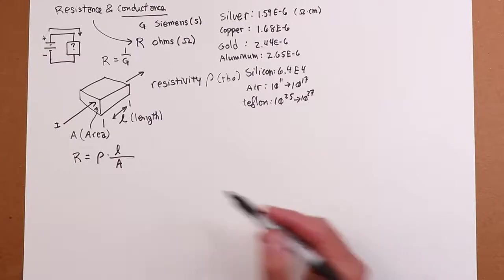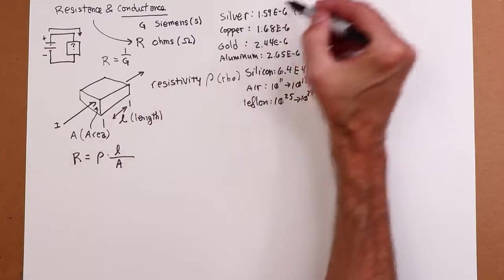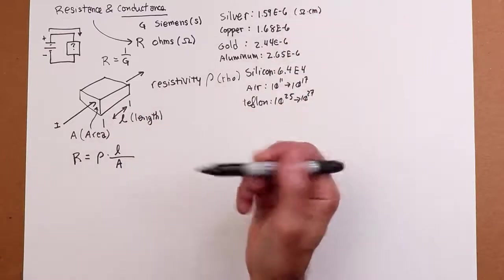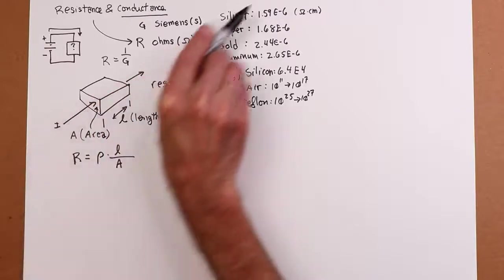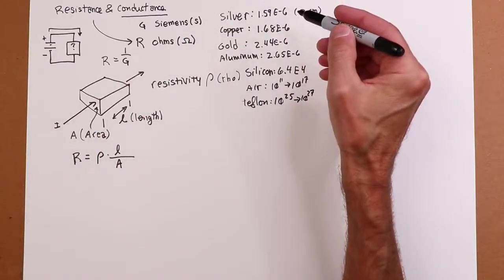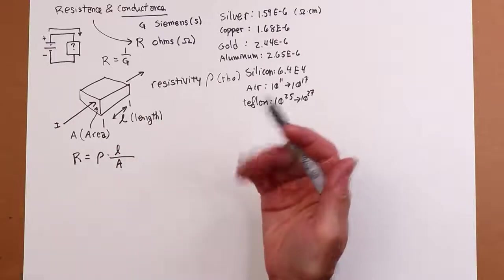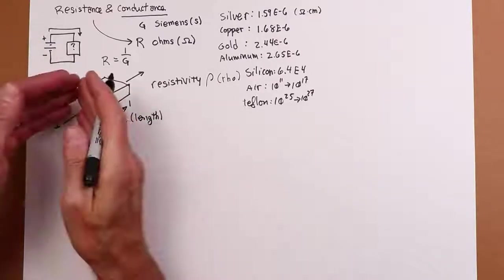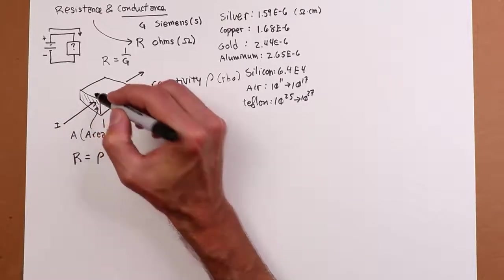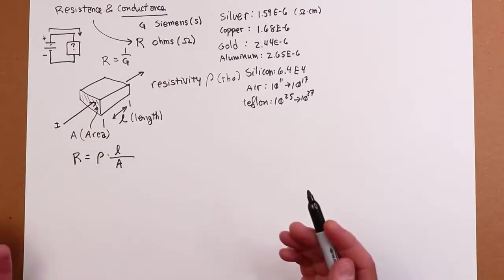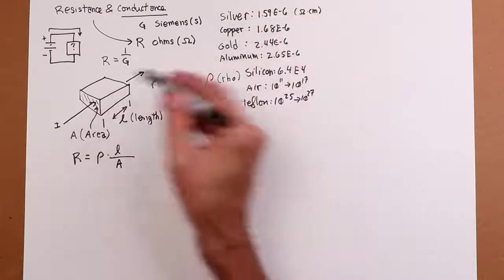So what we find, just looking at this equation, is the greater the length, the more resistance. And that kind of makes sense. If you think of the current flowing through here, the farther it has to go through this material, well, the greater the resistance is going to be. And if you can spread it out over a greater area, cross-sectional area here, then the smaller it will be. And obviously, the greater the resistivity, the larger the resistance.